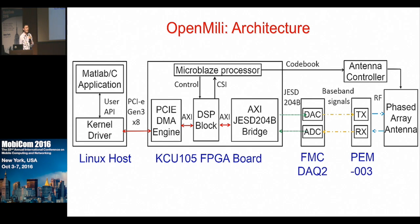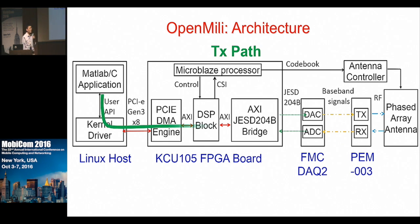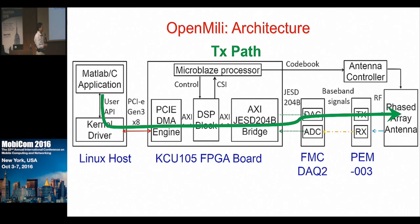OpenMilli has five major modules: the PC host, FPGA platform, data converters (ADC and DAC), RF front-end, and the phased array antenna. To send signals, we define the digital waveform in either the PC host or the FPGA. These signals are converted into analog form using the DAC, the baseband signals are upconverted using the RF front-end, and then emitted through the phased array antenna. The receiver path follows the reverse direction.